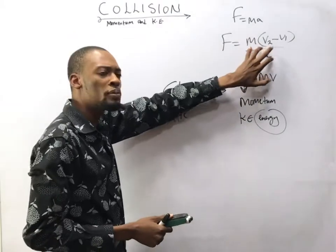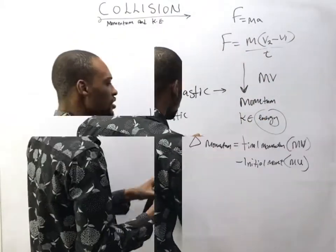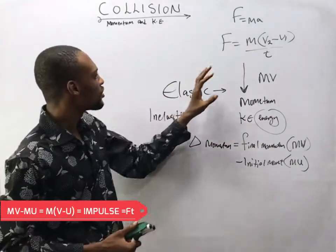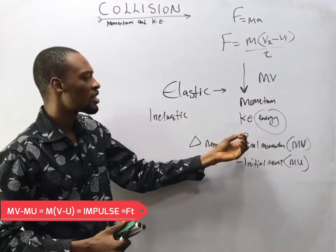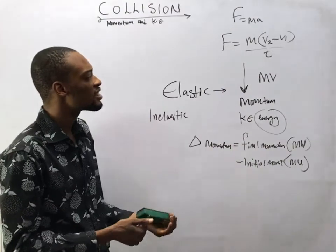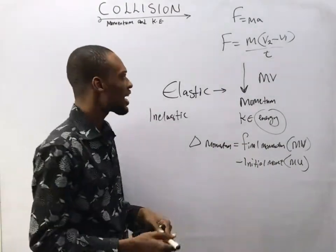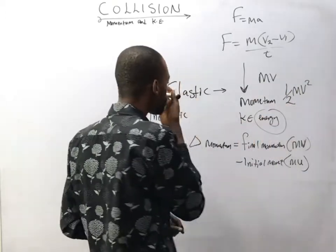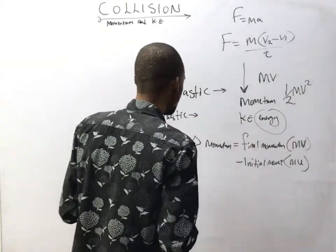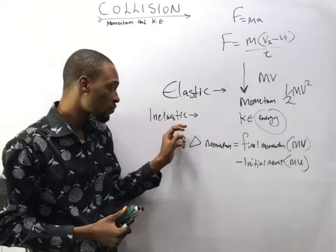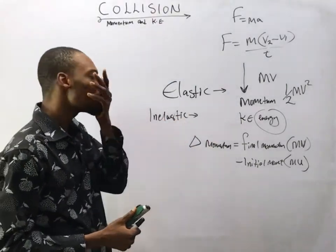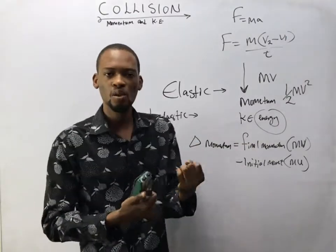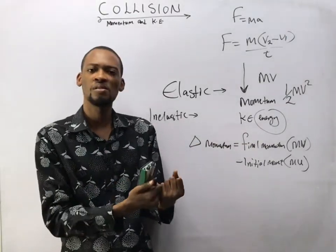Change in momentum is simply the final momentum minus the initial momentum, and change in momentum is also equal to impulse. Kinetic energy is the energy a body possesses due to motion, and kinetic energy is simply half mv squared. Inelastic collision is a type of collision in which energy is lost — momentum is conserved but there is a loss of energy. When a collision leads to loss of energy, that collision is inelastic.